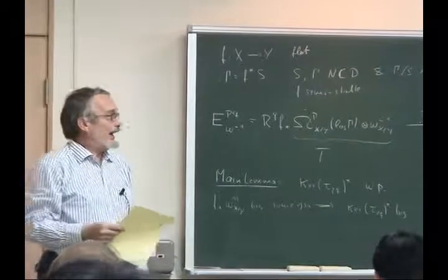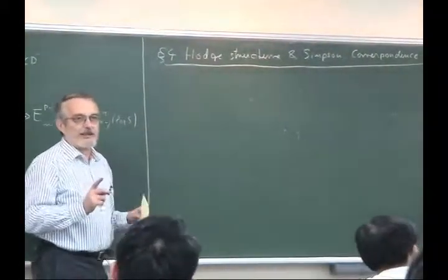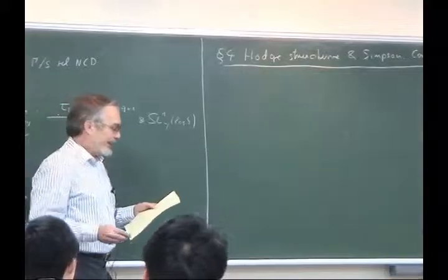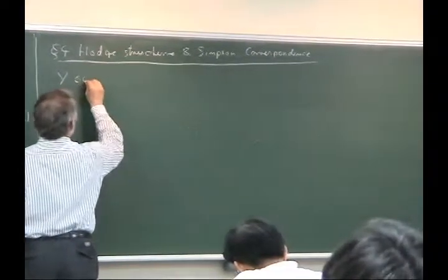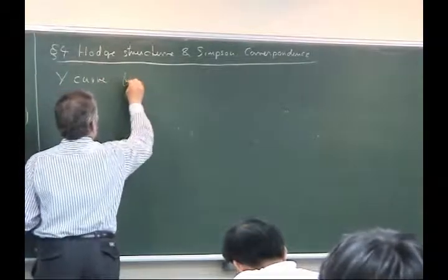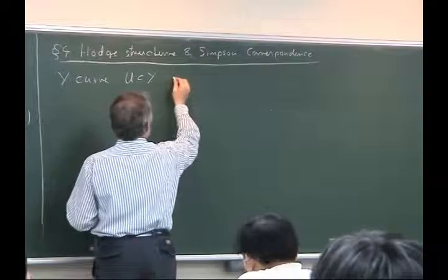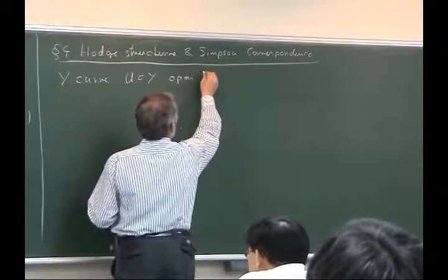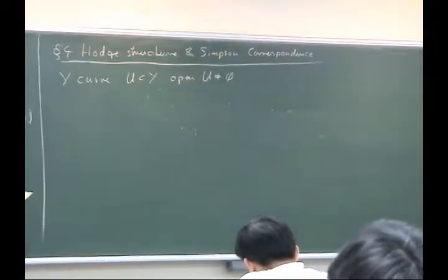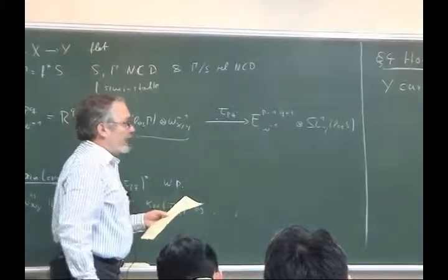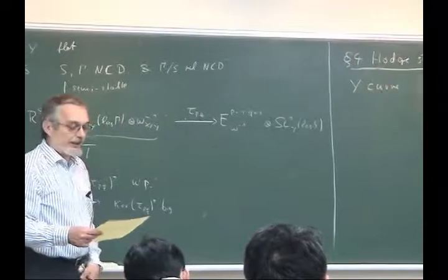Now, for reasons I will explain later, I have to assume for a moment that Y is a curve. So U and Y are the complement of finitely many points. Let's forget completely about this side of the blackboard and restart.